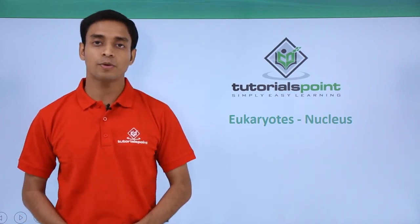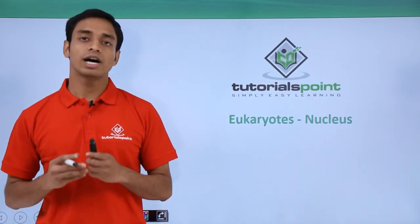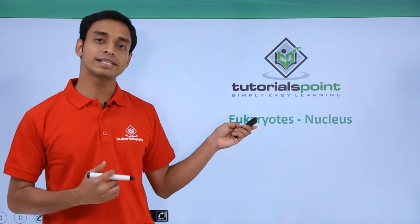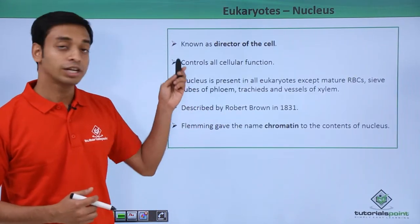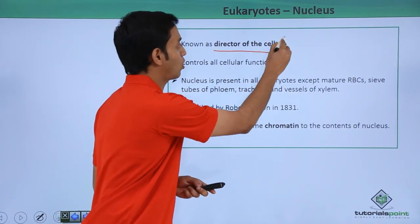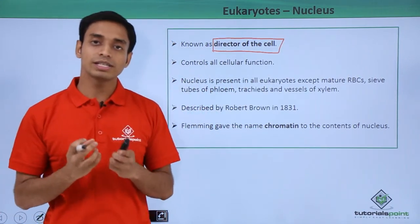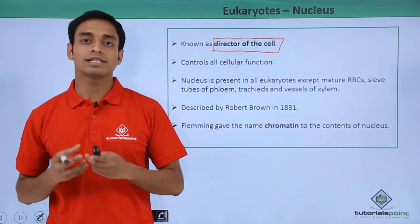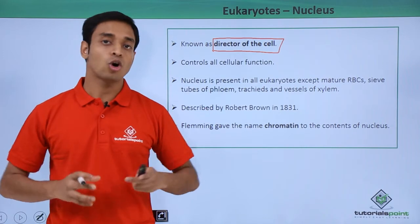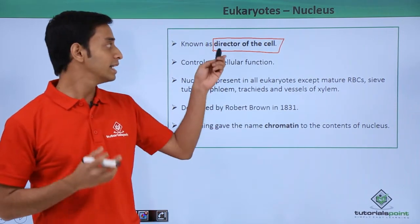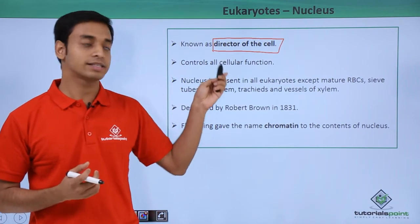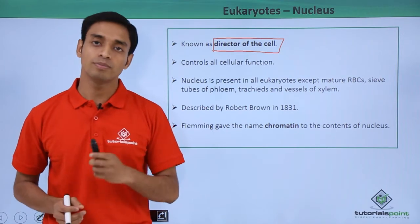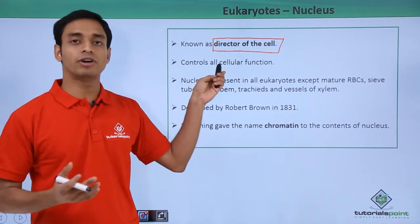Hello everyone, welcome to Tutorials Point. In this video we are going to talk about a very important structure of eukaryotic cells, which is the nucleus. Nucleus is very importantly known as the director of the cell, because the nucleus is the place where every decision for the cell is made — what activities it is going to perform. All the controls of the cell are decided inside the nucleus, hence it is known as the director of the cell, as it controls all cellular functions.